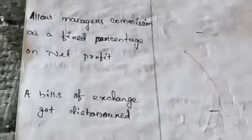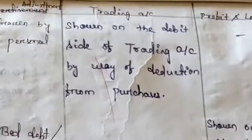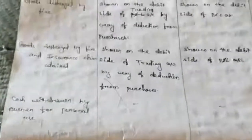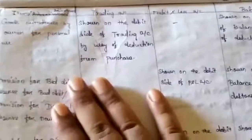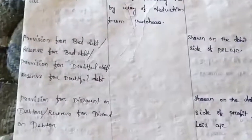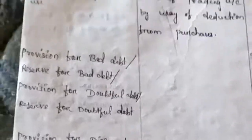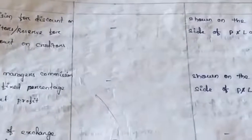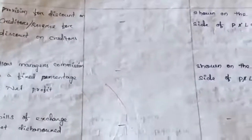These are the adjustments discussed today — approximately 10 to 12 adjustments starting from closing stock, depreciation, bad debts, and others. Notes for these adjustments will be sent very soon. Adjustments with more complexity, such as provision for bad debt, provision for discount on debtors and creditors, will have an exclusive separate video for explanation to avoid any confusion.